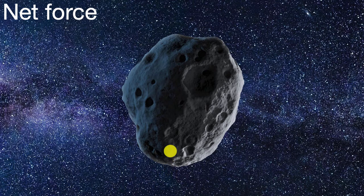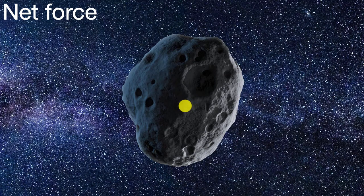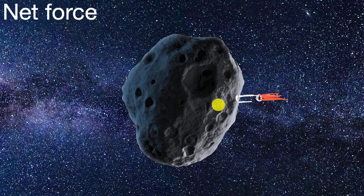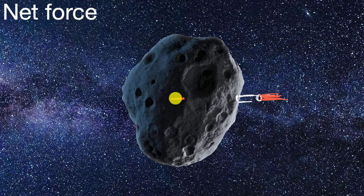Let's say that we are in deep space and there is this asteroid here that, compared to us, is stationary. And what we want to do is start to move it. So we attach a rocket to one side and ignite it, sending all the superheated gas — all of these particles — to the right. We can show the force like this, where the strength or magnitude of the force is the length of this line, and the direction is shown with the arrow.